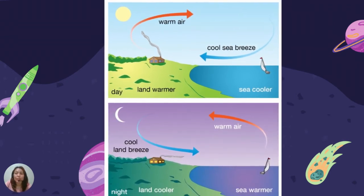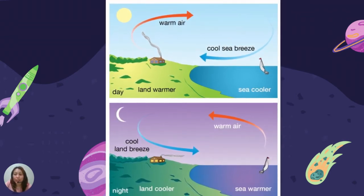The sand and water in the previous activity represent land and water in real life. You learned that sand heats up faster than water and cools down faster than water. In the same way, when land surfaces are exposed to the sun during the day, they heat up faster than bodies of water. At night, when the sun has set, the land loses heat faster than bodies of water.